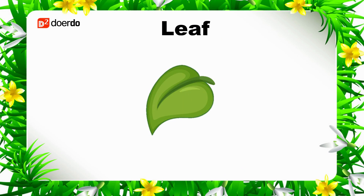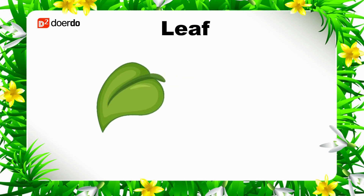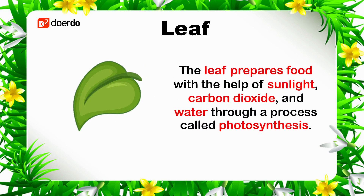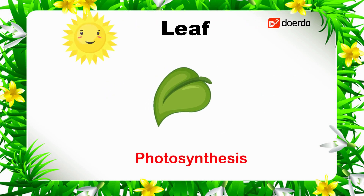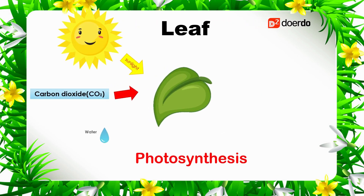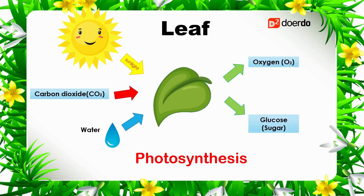Let's learn the functions of leaves. The leaf prepares food with the help of sunlight, carbon dioxide, and water through a process called photosynthesis. This is the process of photosynthesis. During this process, plants release oxygen as a by-product that helps human beings.